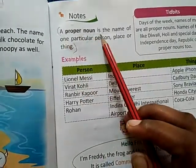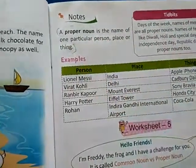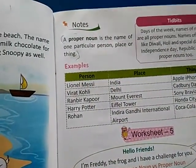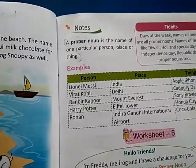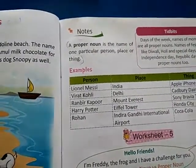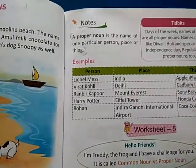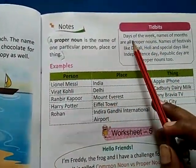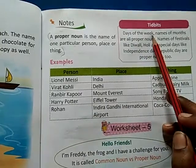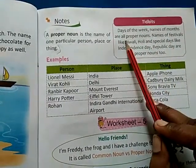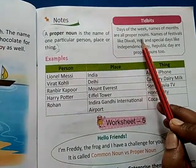Aap sab common noun ke special name hote hai — particular person, place or thing. Proper noun particular person, place or thing ka name hota hai. Yani vishesh vyakti, vastu, sthan aadi ka name hota hai proper noun. Jaise ki kuch examples — days of week, names of months are all proper nouns.